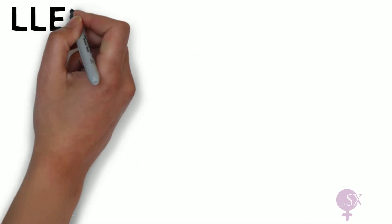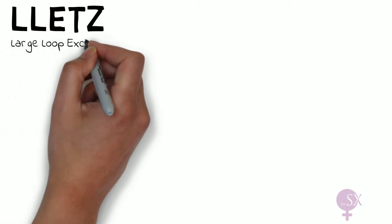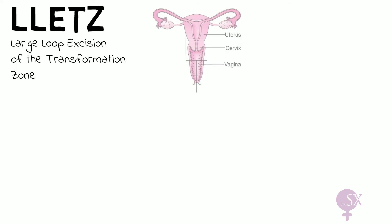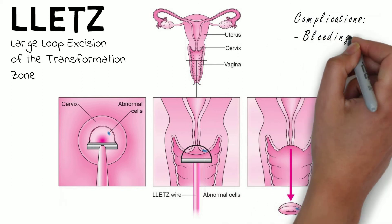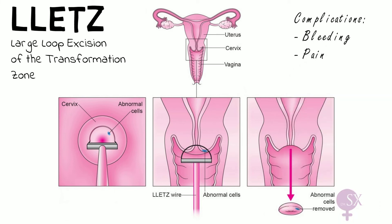Excision is performed by means of a LLETZ procedure — large loop excision of the transformation zone. A cutting diathermy loop is used to remove a small part of the cervix; the sample is then sent to the lab to ensure the precancerous lesion has been removed completely with an adequate margin. Complications include bleeding and pain. Importantly, inform the patient of the risk of subsequent preterm delivery, as removing a chunk of the cervix may result in cervical incompetence during a future pregnancy.